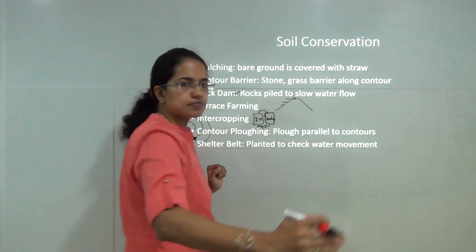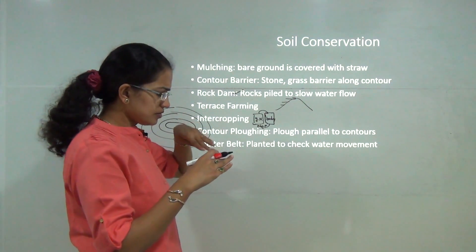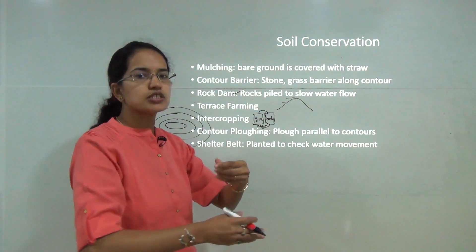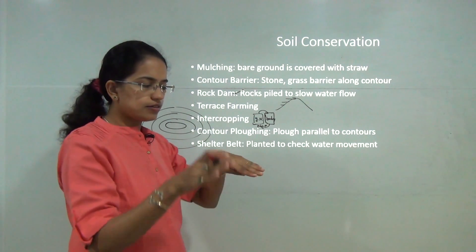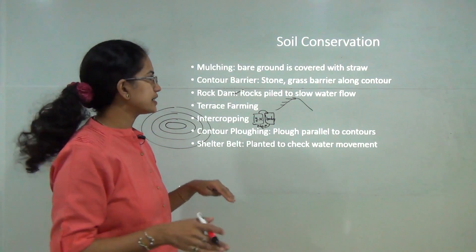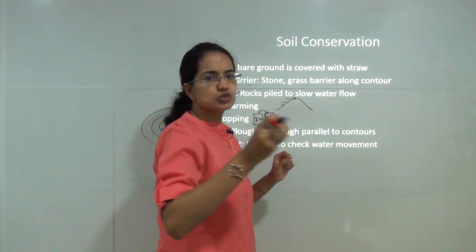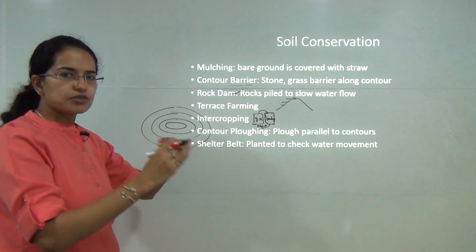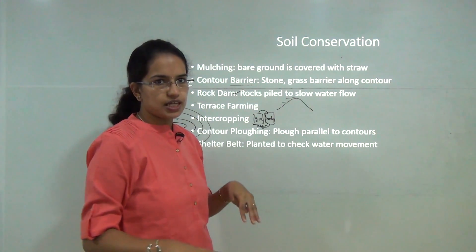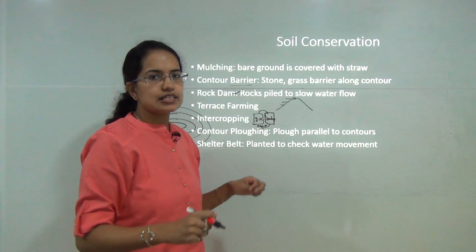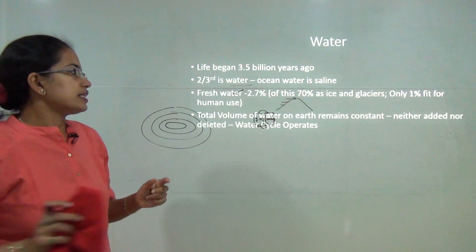Rock dams slow water flow using large rocks, decreasing runoff and increasing soil fertility. Contour barriers use stones or pebbles placed along contours to prevent soil from washing away. Mulching covers fallow land with straw so it won't be blown or washed away, allowing fertility to be regained over time. These are the key methods for soil conservation.